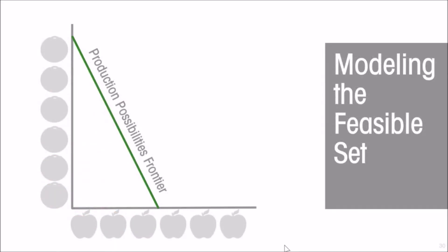That line is called the production possibilities frontier. It's the boundary of all the feasible production possibilities.